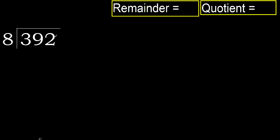392 divided by 8. 3 is less, therefore next. 39 is not less, therefore with 39.